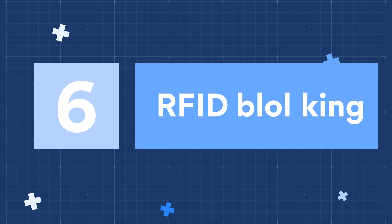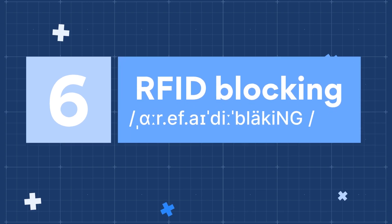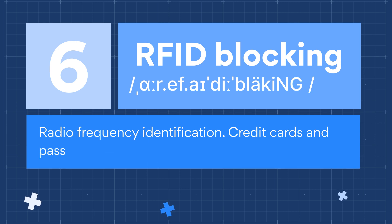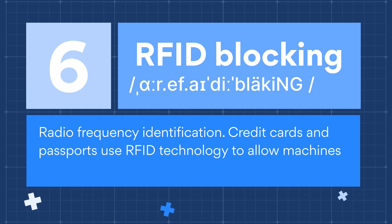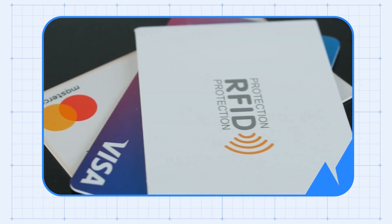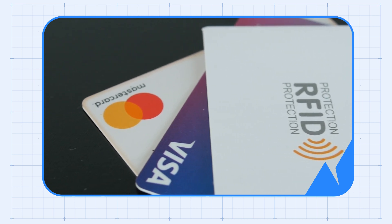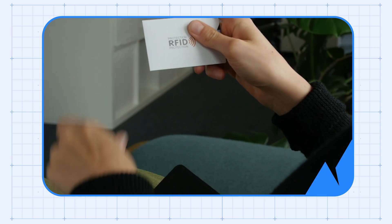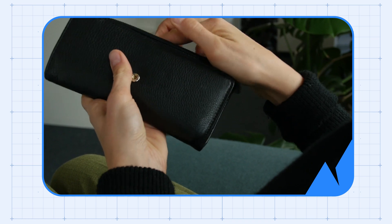Number 6: RFID Blocking. RFID stands for Radio Frequency Identification. Credit cards and passports use RFID technology to allow machines to scan them from a short distance. RFID blocking means using special wallets, sleeves, passport covers, and other objects that limit RFID scanning.